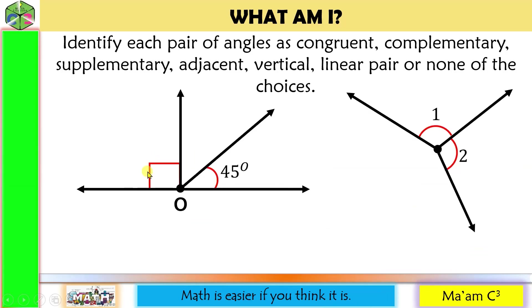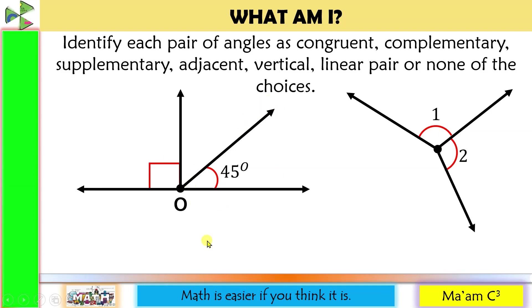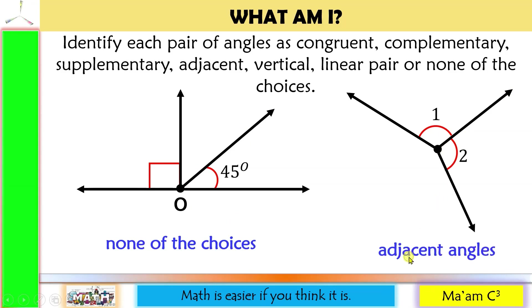The next set: this angle measures 90 and this one is 45 degrees. Not complementary, neither supplementary. They are not adjacent because they do not share a common ray. So, none of the choices. On this figure, they share a common ray, so they are adjacent angles. Nothing is mentioned about the measurement of their angles.